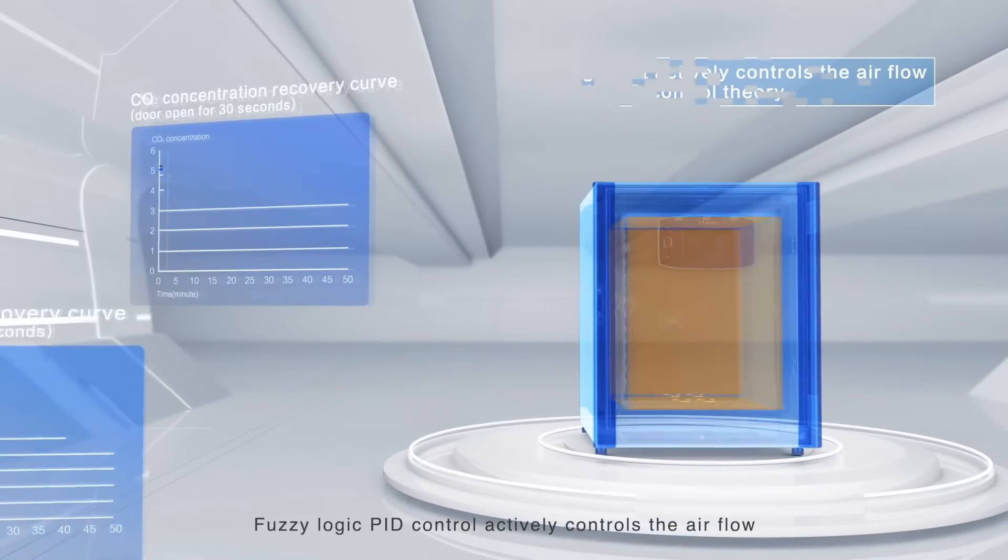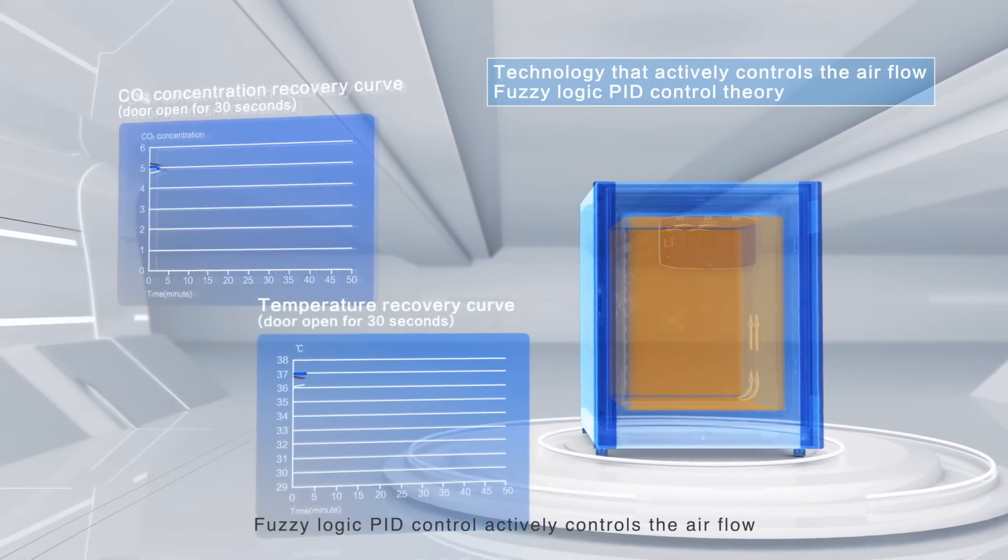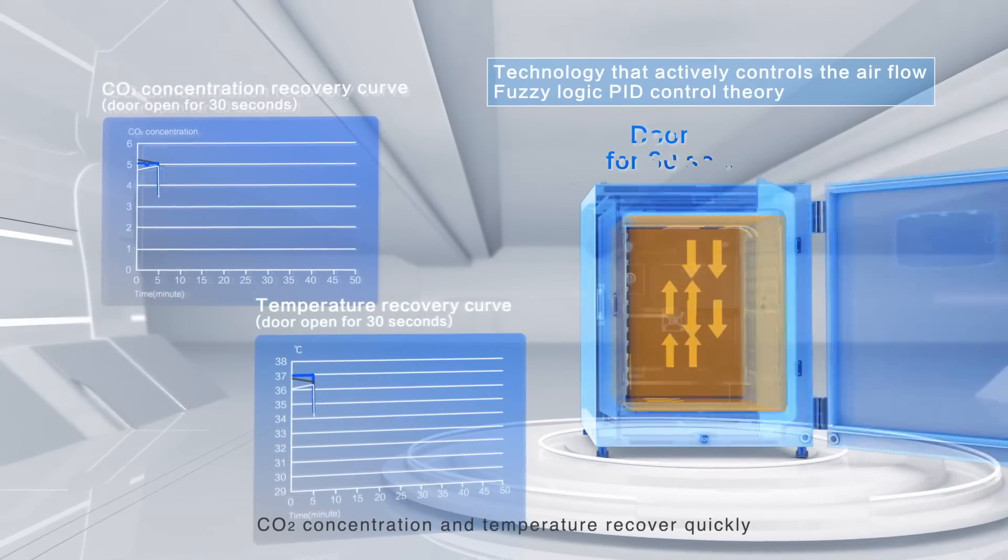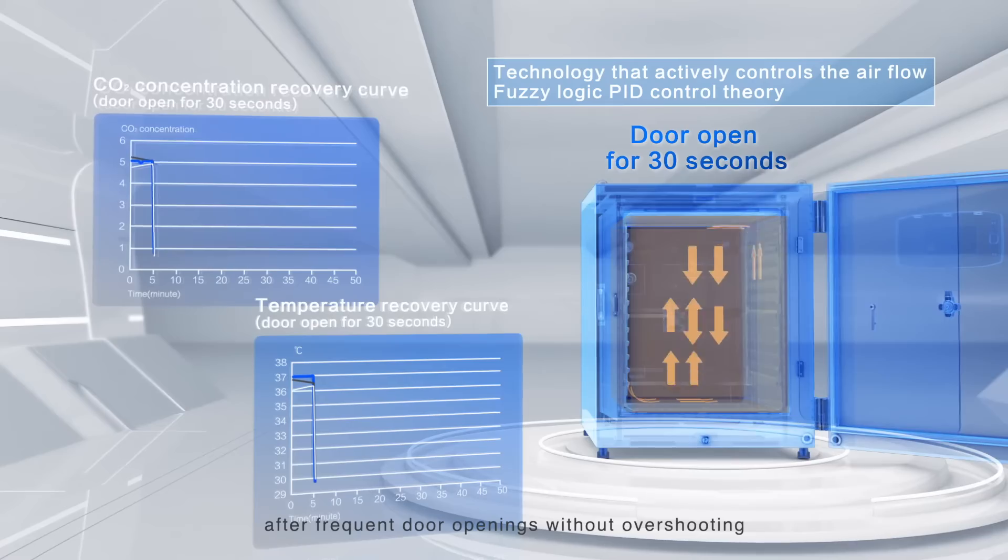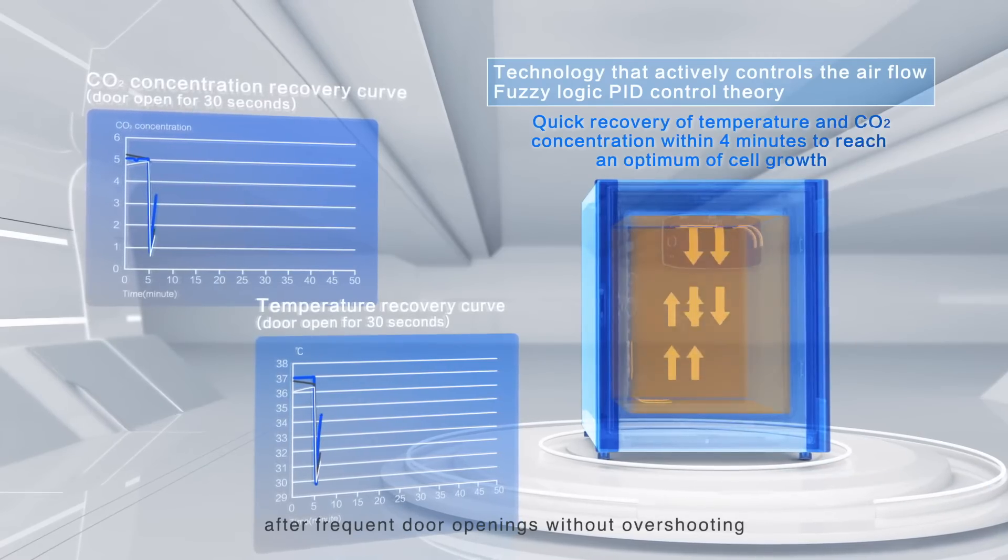Fuzzy Logic PID control actively controls the air flow. CO2 concentration and temperature recover quickly after frequent door openings without overshooting.